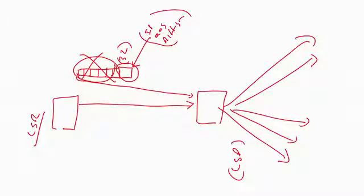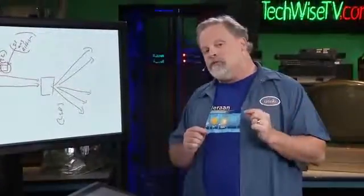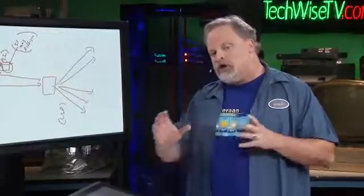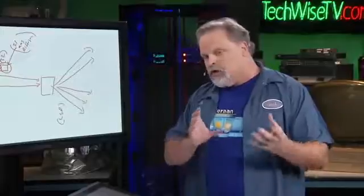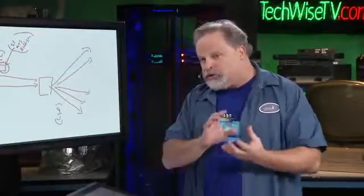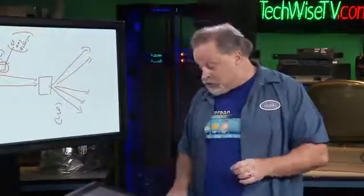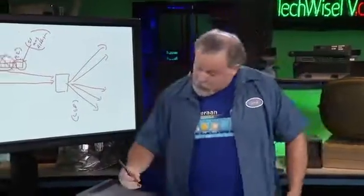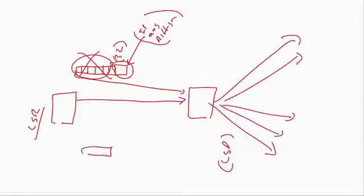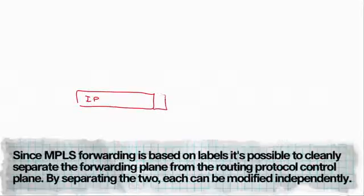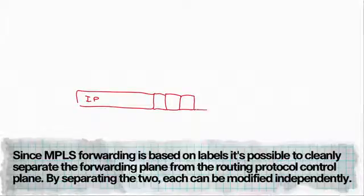Where MPLS really makes its bones and gives you creativity is not only can you carry your QoS information and forward sensitive traffic across your WAN, but it allows you to start stacking these labels up. I can take my standard IP packet and put multiple labels on here, and I can start appending these on this device.